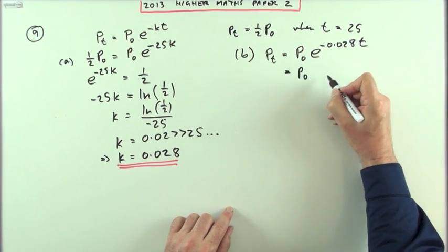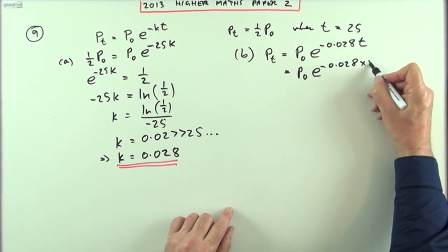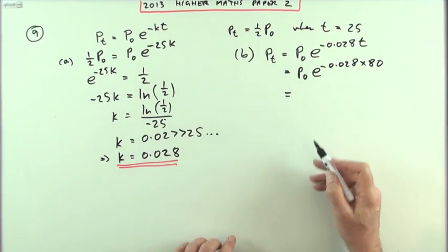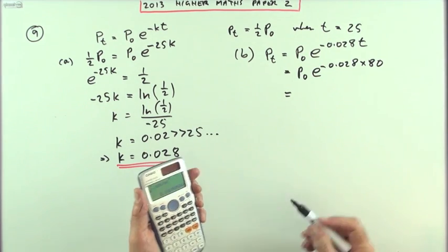So that means it's going to be p0 e to the negative 0.028 times 80, because it asked for it after 80 days. Well, that's just a press button calculation.